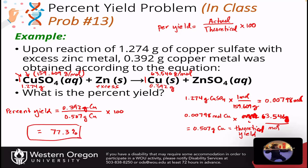So that's the percent yield. Remember, you've got to go grams to moles to moles and then back into grams to get your theoretical yield. That's going to end Chapter 2 for us, and now we can jump into Chapter 3.